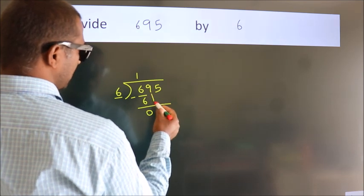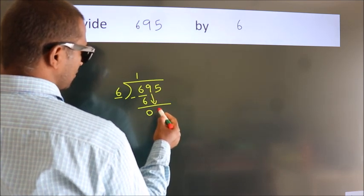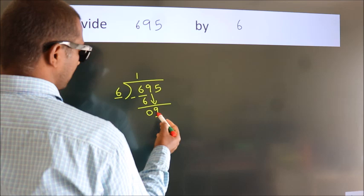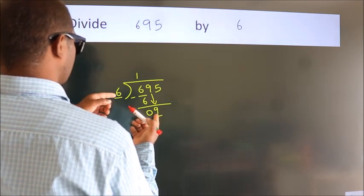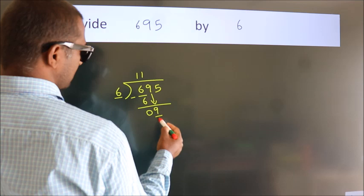So after this, bring down the beside number. So 9 down, so 9. A number close to 9 in 6 table is 6 once, 6.